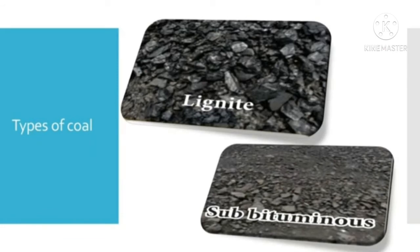Coal is classified into four main categories based on the amounts of carbon it contains and the heat energy it can produce. They are lignite, subbituminous, bituminous and anthracite. Among these four types, anthracite is the most desirable one due to its high heat content.